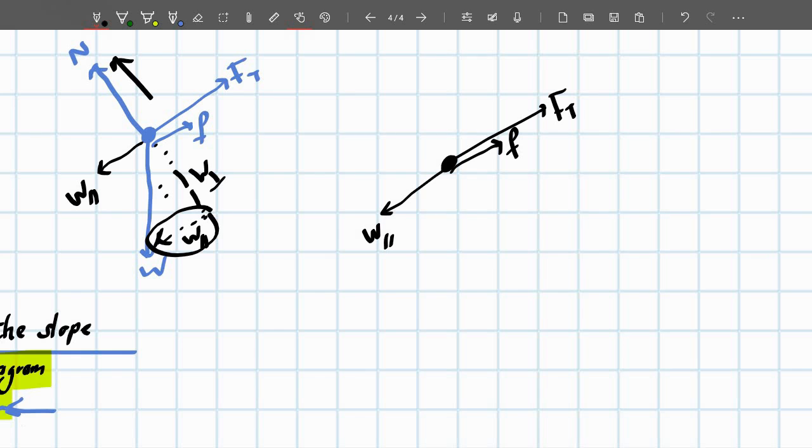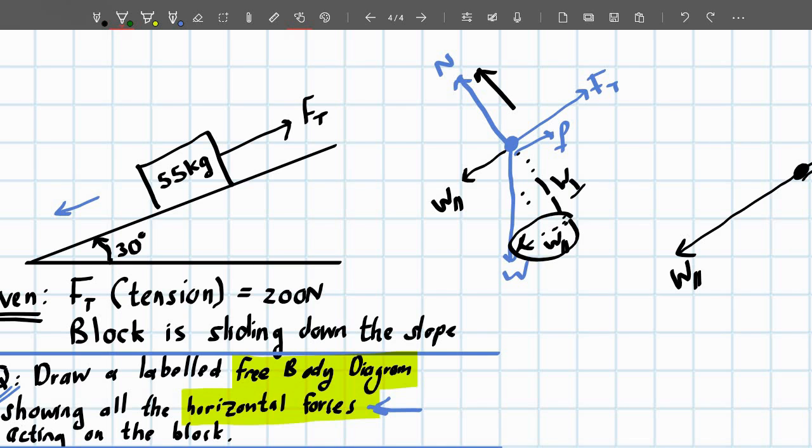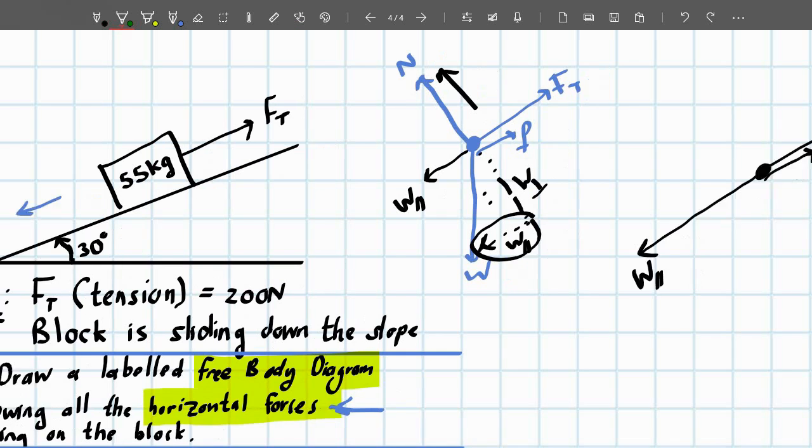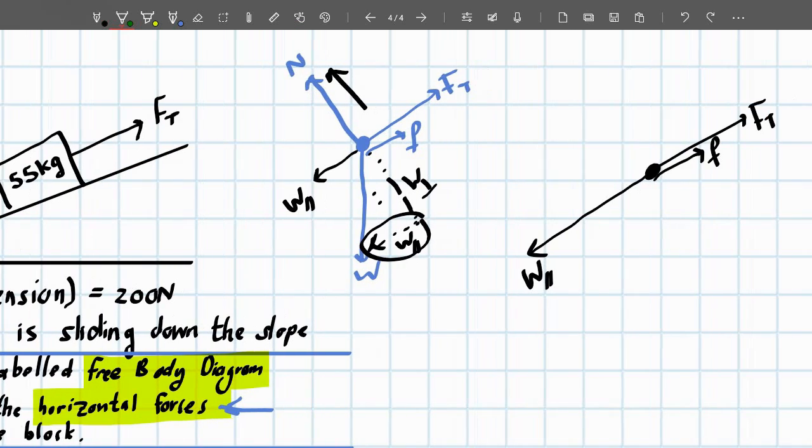And your final answer, you would have your weight perpendicular. We also know that this parallel weight, the parallel weight, will actually be greater than both the frictional force and the tension applied. So we should try and make that a little longer because the object is moving downwards. So, we'd have weight perpendicular. For completeness sake, let us just calculate the weight that is parallel.